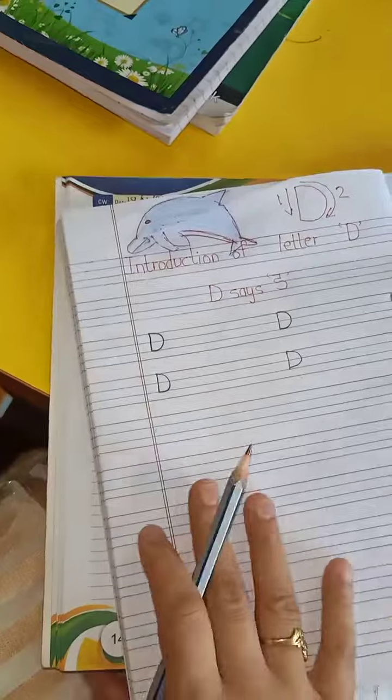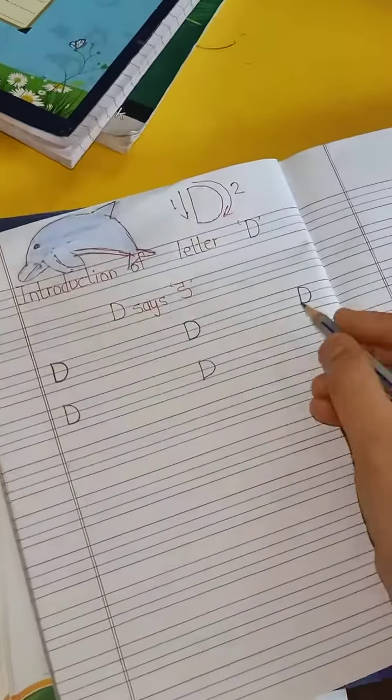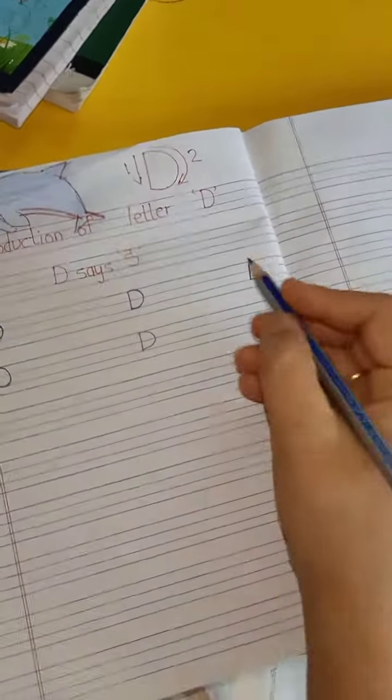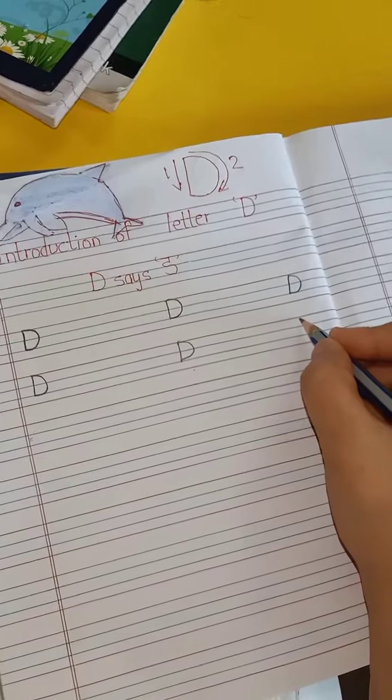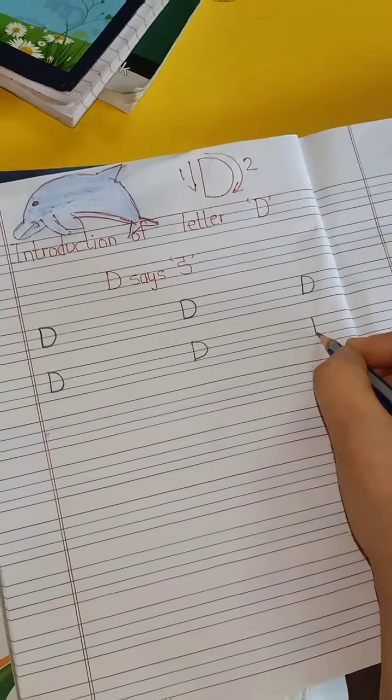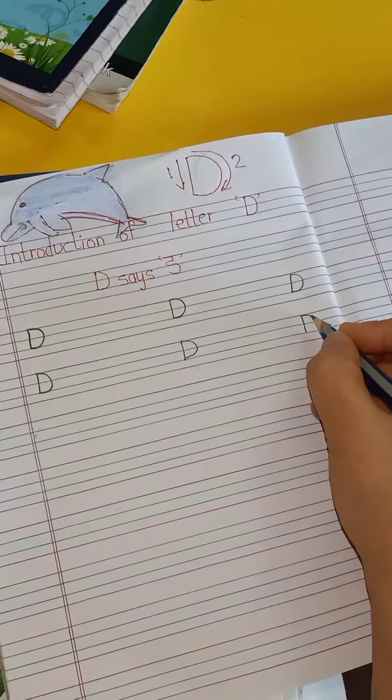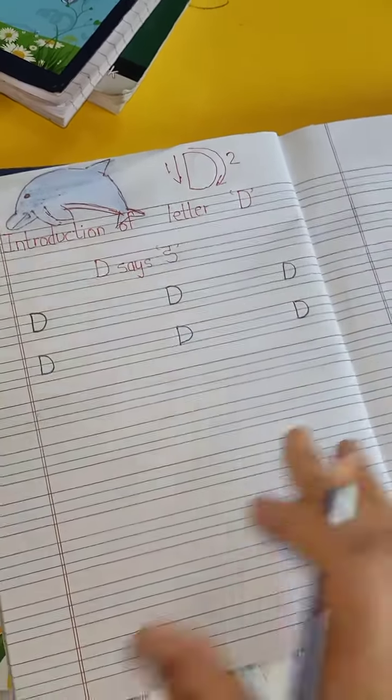And open your notebook. You have to do letter D in your notebook. So how to write letter D? Better make a standing line from capital to base line, then make a curve from capital to base line.